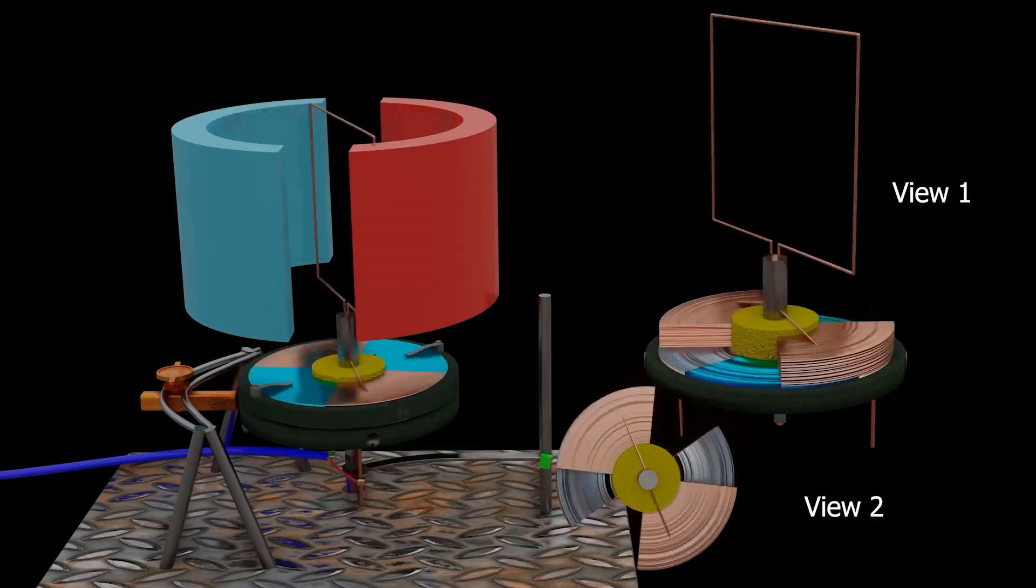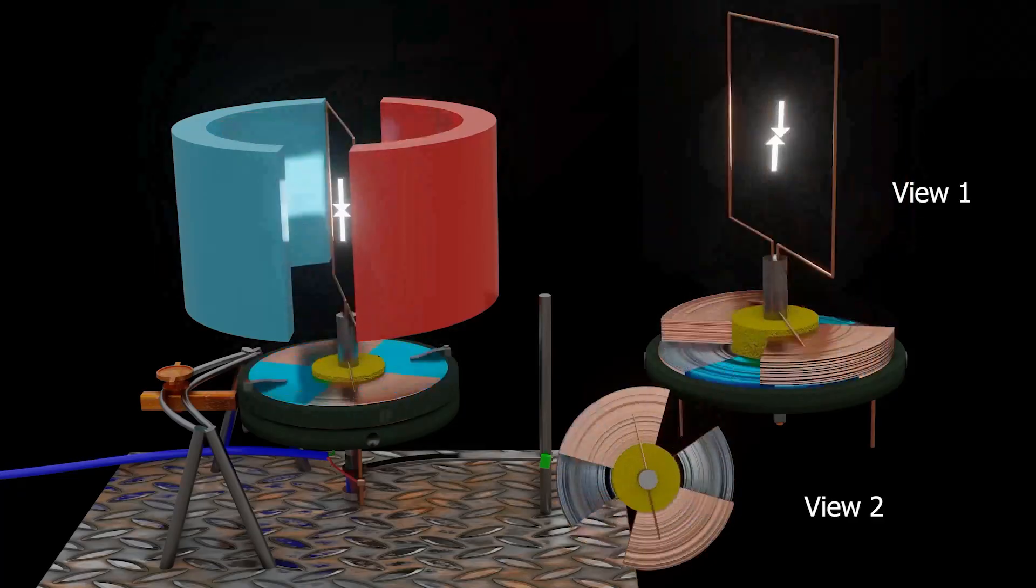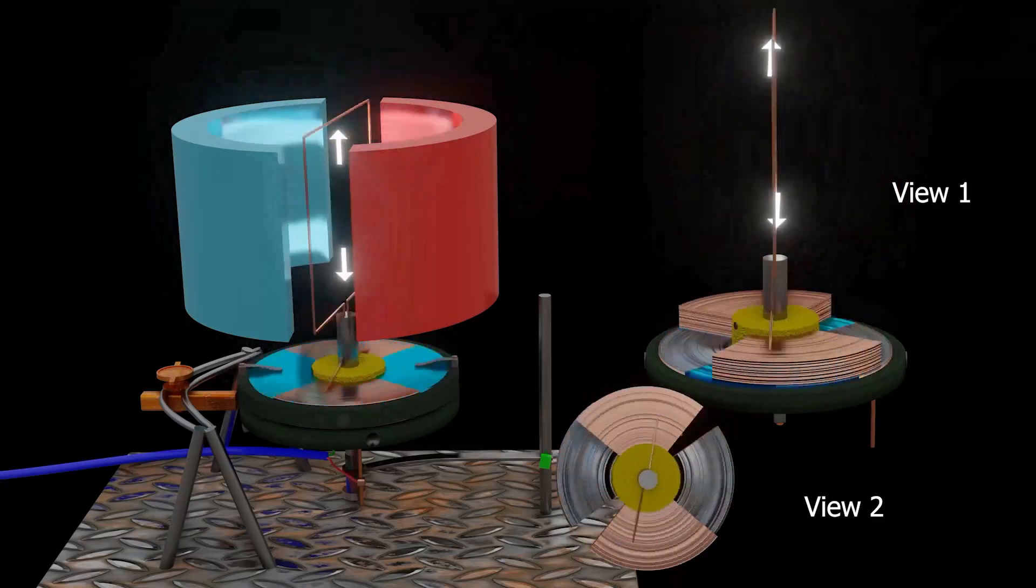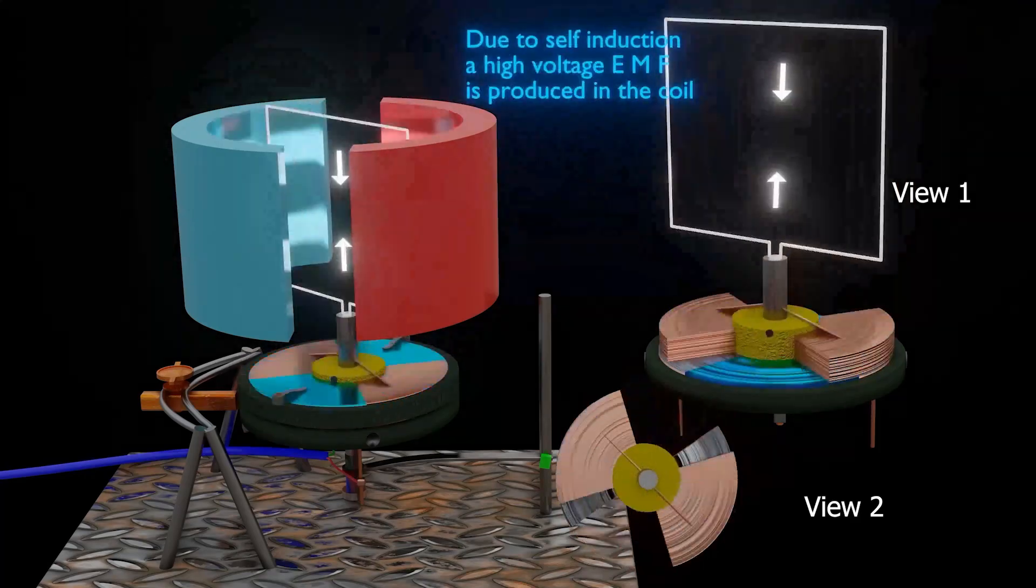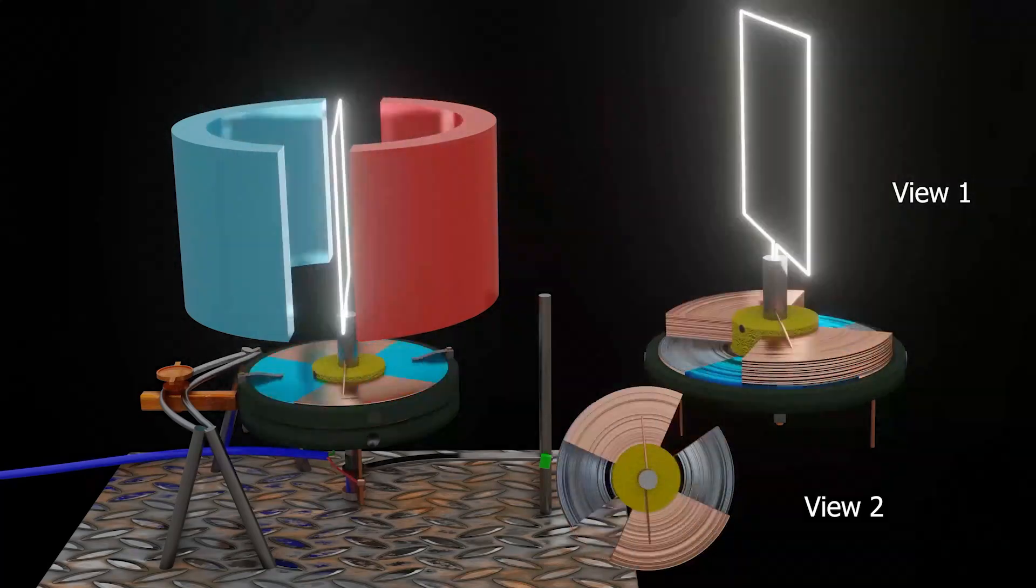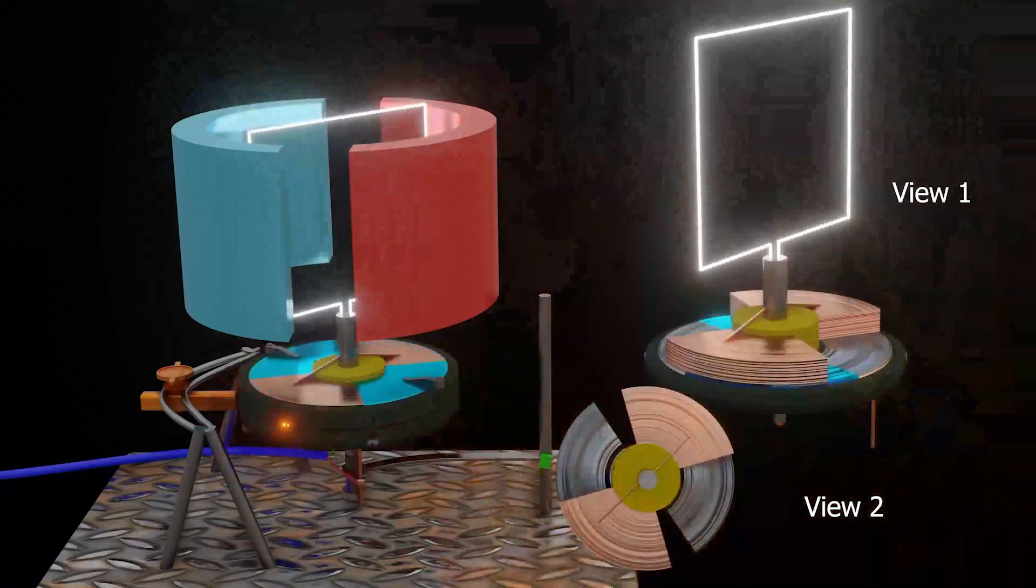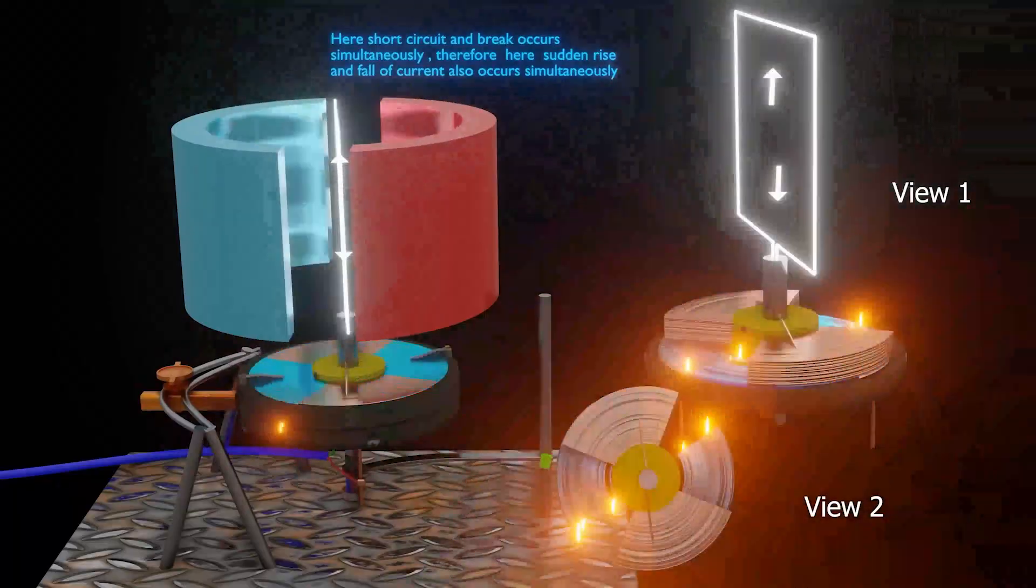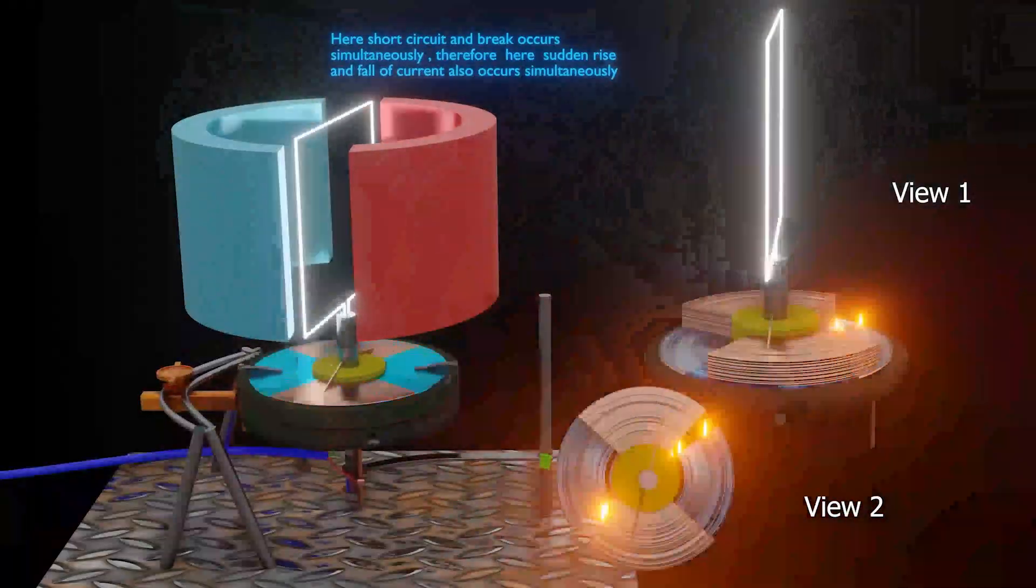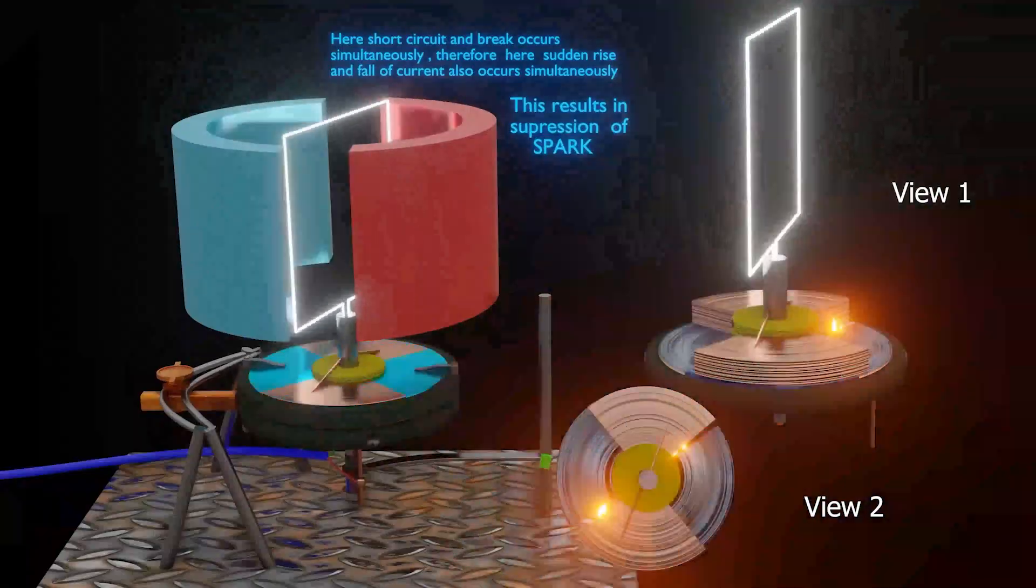This sudden change of current, whether it is sudden decrease or sudden increase, gives rise to self-induction phenomenon. Due to this self-induction, a high voltage EMF is produced. This high voltage EMF can cause sparking. But here the short circuit and the brake produce opposite effects in the armature of the coil. And due to these opposite effects, there will be a suppression of spark.